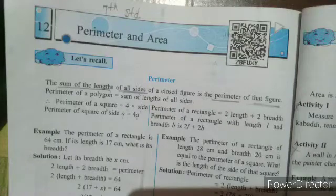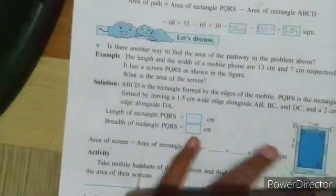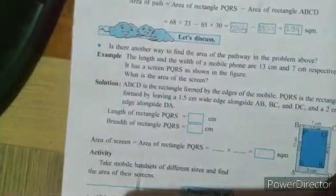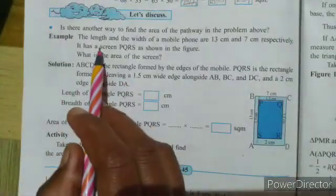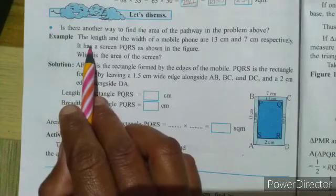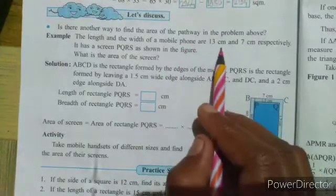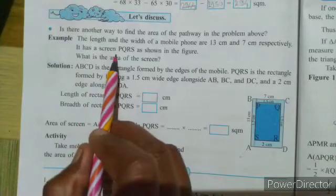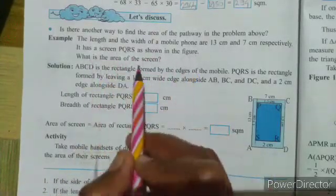Hello everyone, let's continue our topic: perimeter and area. Today we are going to see one important example based on area. The example is: the length and the width of a mobile phone are 13 cm and 7 cm respectively. It has a screen PQRS as shown in the figure. What is the area of the screen?